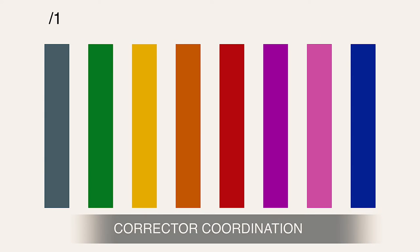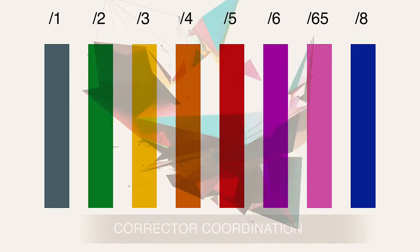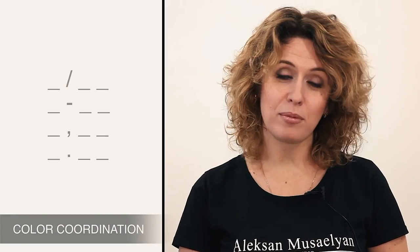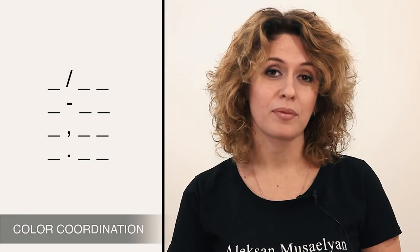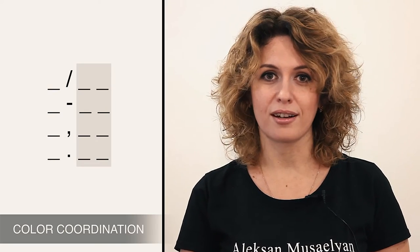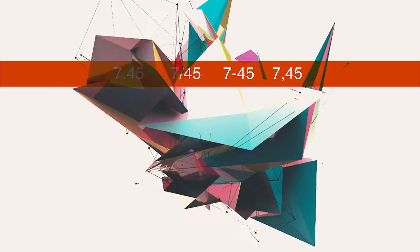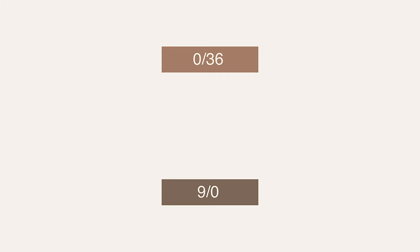The coordination of correctors is similar to the main color chart. The first is ash. The second is green. The third is golden. The fourth is copper. The fifth is red. The sixth is violet. The 6.5 is pink. The eighth is blue. Coordination of colors and nuances in the palette is indicated by separating characters — fraction, dash, comma, or full point — and numbers set before and after the separating character. The absence of any pigment is indicated by a zero. For example, a toner dye 0/36 or a natural shade 9/0.